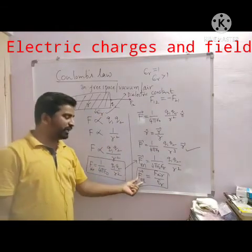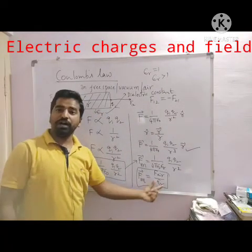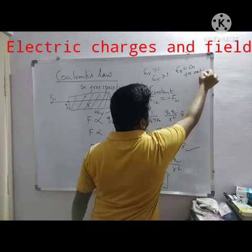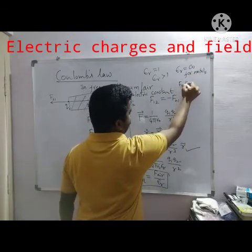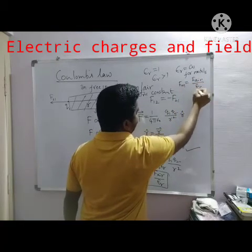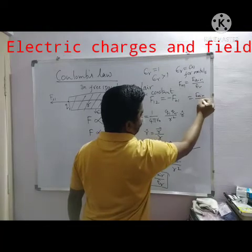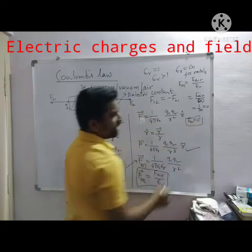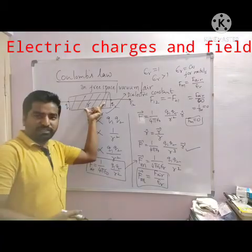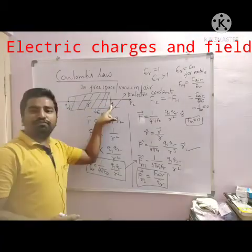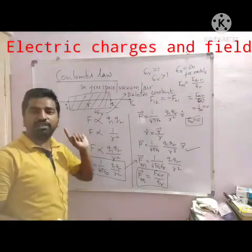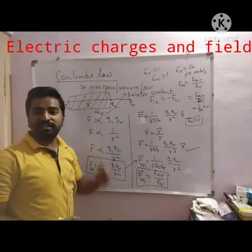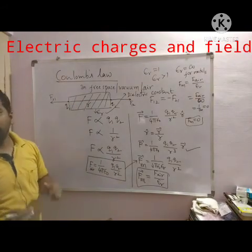The force decreases by a factor of epsilon R. We also know that epsilon R is infinity for metals. So if a metal is placed between the two point charges, F in medium equals F air divided by infinity, which is 0. This means the Coulomb force becomes zero when a metal is inserted between the two charges. This is a very important result regarding Coulomb's law.